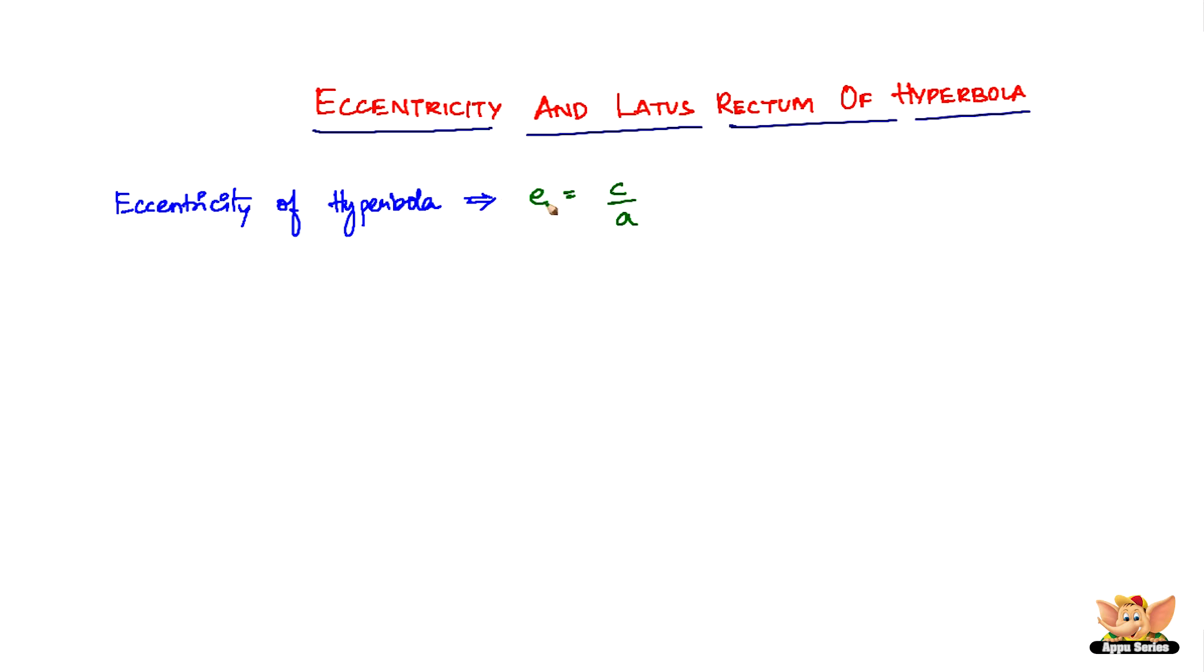So the eccentricity of hyperbola is given by E equals C by A, where C is the distance between the center of the hyperbola and one of the foci, and A is the length of the semi-major axis. So that's how you find the eccentricity of hyperbola.